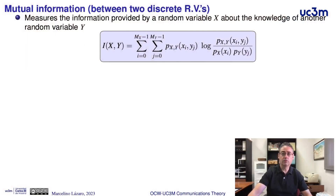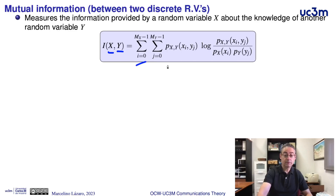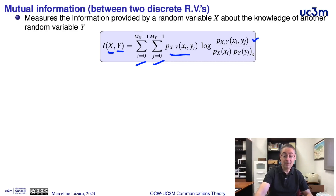The mutual information between two random variables x and y is given by the addition over the events of x and the events of y of the joint probability times the logarithm of the ratio between the joint probability and the product of the two marginal probabilities of x and y.